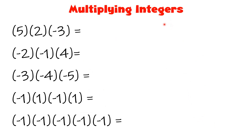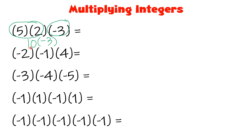Let us have more examples. What if we are multiplying not only 2 integers but more than 2 integers, like 5 times 2 times negative 3? Let us multiply first 5 and 2: 5 times 2 is equal to 10. Then multiply it with negative 3: 10 times negative 3 gives negative 30.